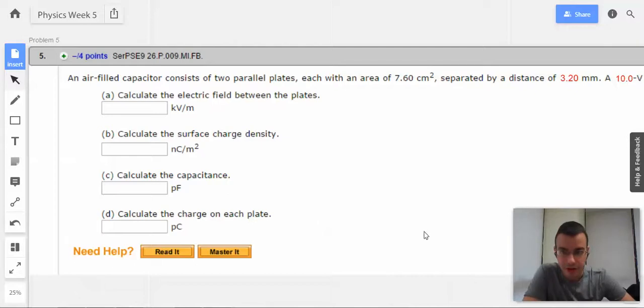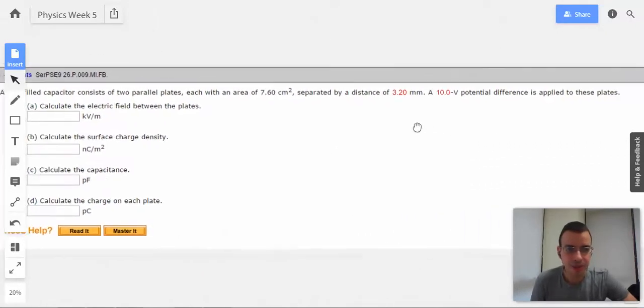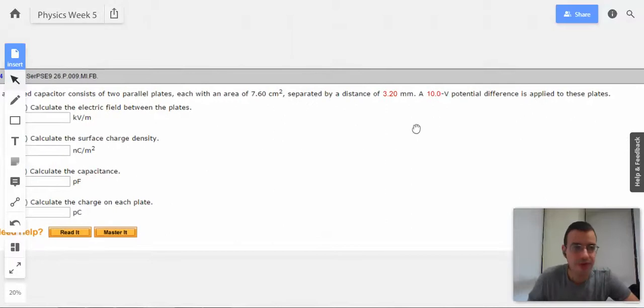Problem 5. An air-filled capacitor consists of two parallel plates, each with an area of 7.6 square centimeters, separated by a distance of 3.2 millimeters and 10 volts.